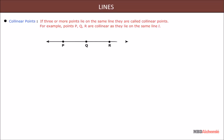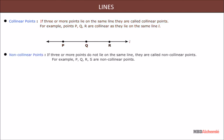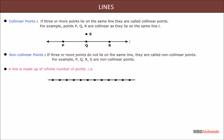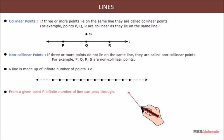Collinear points: if three or more points lie on the same line, they are called collinear points. For example, points P, Q, R are collinear as they lie on the same line l. Non-collinear points: if three or more points do not lie on the same line, they are called non-collinear points. For example, P, Q, R, S are non-collinear points. A line is made up of an infinite number of points; from a given point P, an infinite number of lines can pass through.